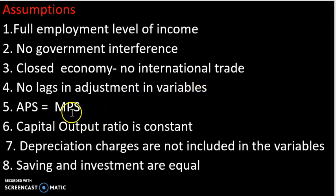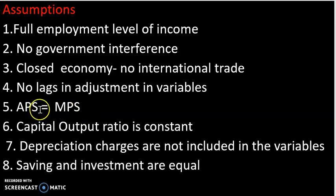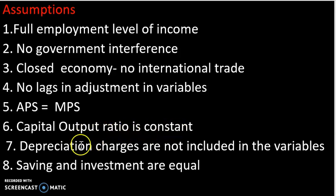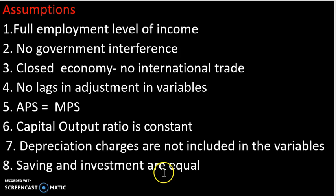Fifth assumption: APS is equal to MPS. APS is the ratio of total saving to total income, and MPS is the ratio of change in saving to change in income. Sixth assumption: the capital-output ratio is constant. Seventh: depreciation charges are not included in the variables. Eighth: saving and investment are equal.